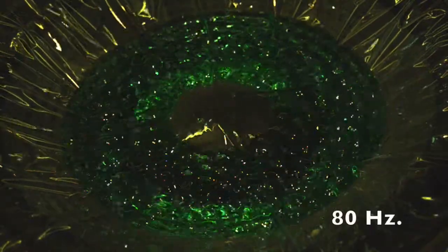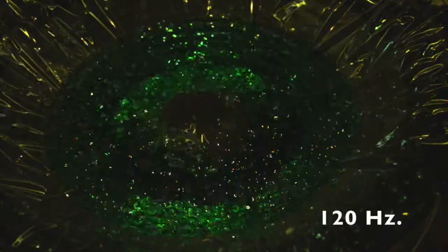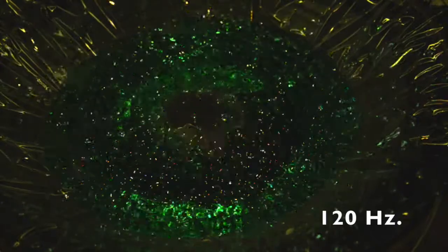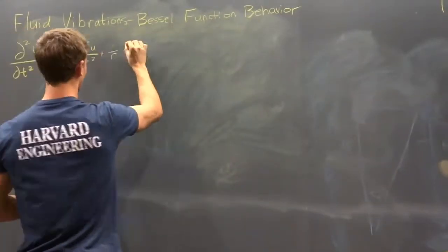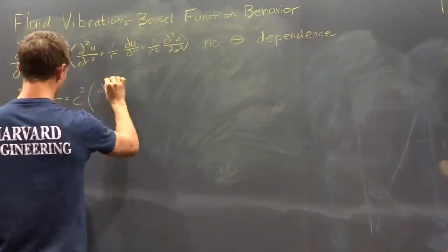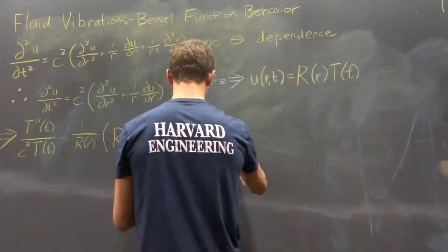Our project investigates the differences in behavior of Newtonian and non-Newtonian fluids when subjected to forces generated by a moving speaker cone. Here the speaker is filled with water and played at 23 Hz. We can see that there are a number of wave peaks distributed across the surface of the water. This surface can be modeled as a circular membrane and solved according to the radial wave equation with no-slip boundary conditions.